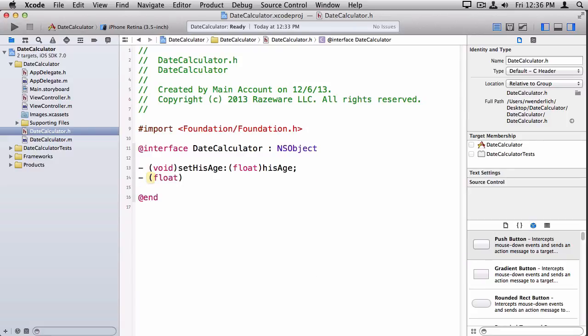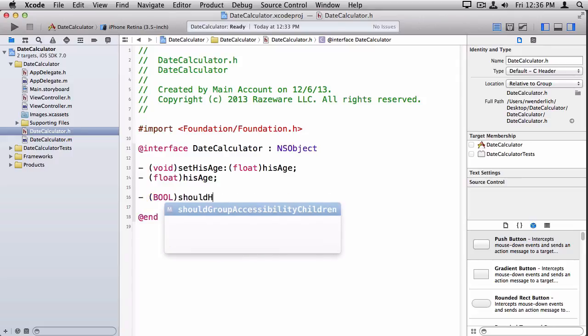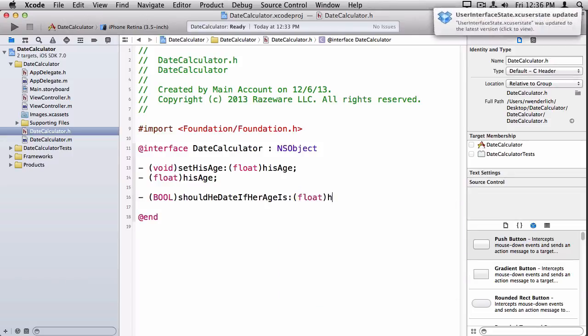So that's the setter for his age. Let's make a getter too. So the getter will return his age, so it's going to return a float, and we'll call it hisAge. Now we need the method where we can pass in the age of the girl and see if the girl can date this guy. So we put the dash, and we say it's going to return a true or false, so that's a bool. And shouldHeDate ifHerAgeIs, and we pass a float for her age.